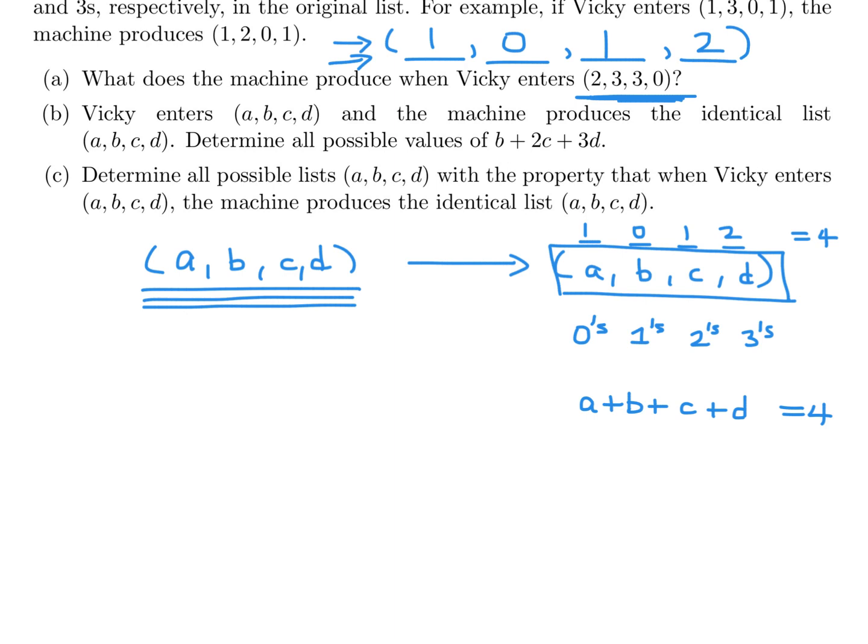So you can try it. If you're not convinced, try it with some other number. Put in something here. You can put in, like, 3, 2, 0, 1. And then let's see here. So our list, if we produce it, the number of 0s is 1. Well, this is just 1, 1, 1, 1. And that, again, if you add them up, will equal 4. It's always going to be 4. I want you to be convinced of that.